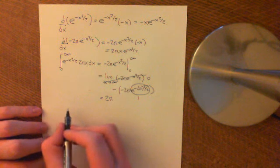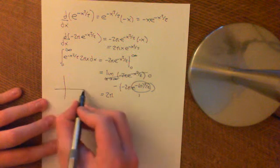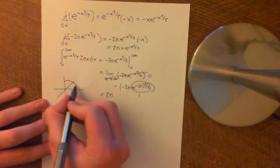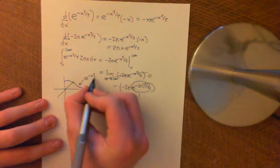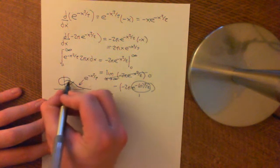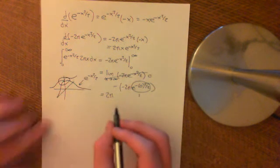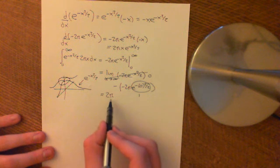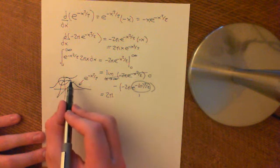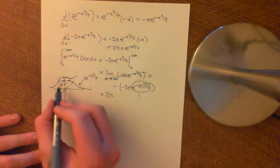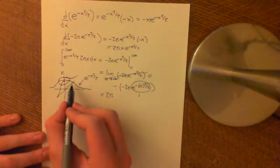The area — the volume — under this molehill equals 2 pi. To recap: we have our bell-shaped curve e to the negative x squared over 2, we rotate it around to get a molehill-like surface in 3D, and the volume under that equals 2 pi. But there's another way to find this volume: we can view the molehill as a function of two variables using multivariable calculus.